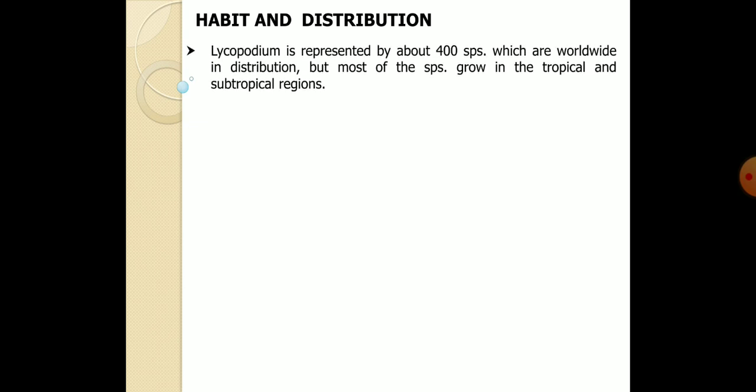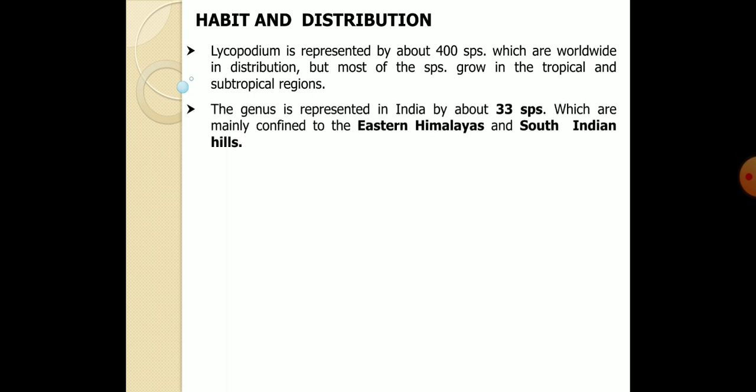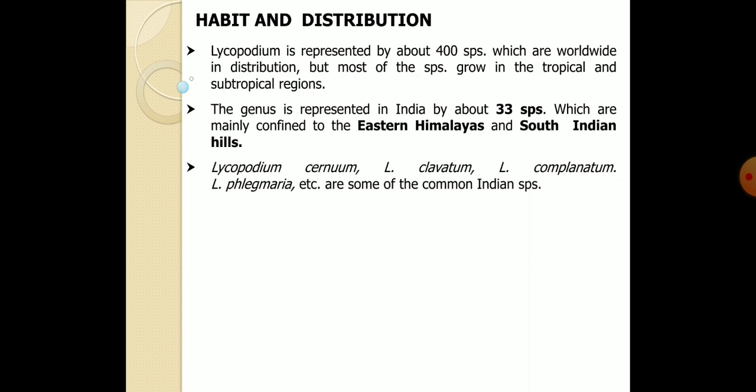There are more than 400 species of Lycopodium found all over the world. Commonly, Lycopodium grows in tropical and subtropical regions. Especially in India, there are about 33 species of Lycopodium, growing mainly in moist areas of the country, particularly the Himalayan region and the South Indian hills. High-altitude or moisture-rich regions are the main habitat of Lycopodium.